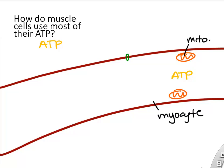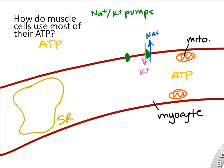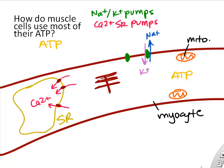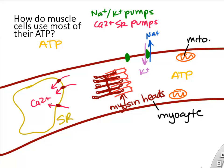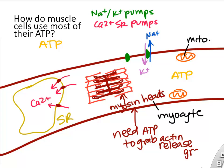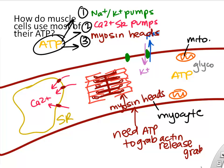Where is all that ATP used? First, a lot is used by the sodium-potassium ATPase pumps to pump sodium out and potassium back into the cell. Second, the calcium pumps in the SR use ATP to pump calcium back in during relaxation since that goes against diffusion. Third, the myosin protein heads constantly use and break down ATP as they grab onto actin, release, and grab back on during contraction. Those are the three main sources of ATP consumption in muscle cells, and they can use a lot when you're very active.